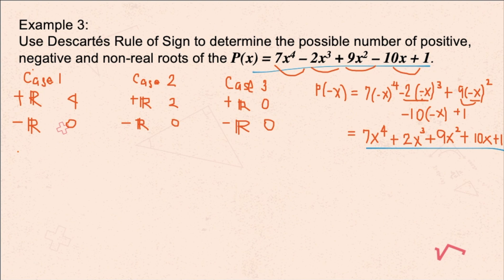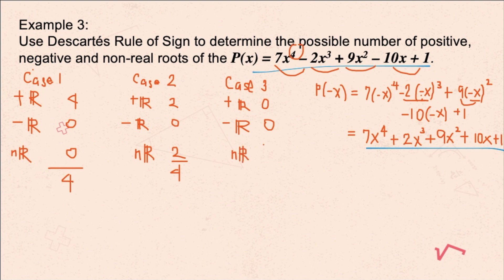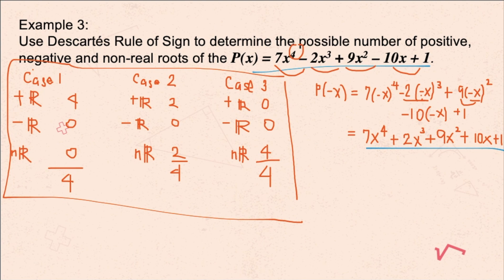The given is a 4th-degree polynomial, so adding real roots and non-real roots across all 3 cases must equal 4. In case 1: 4 positive plus 0 negative equals 4, so non-real roots are 0. In case 2: 2 positive plus 0 negative, so non-real roots must be 2 to total 4. In case 3: 0 positive and 0 negative real roots, so non-real roots must be 4. These are the 3 cases using Descartes' rule of signs.